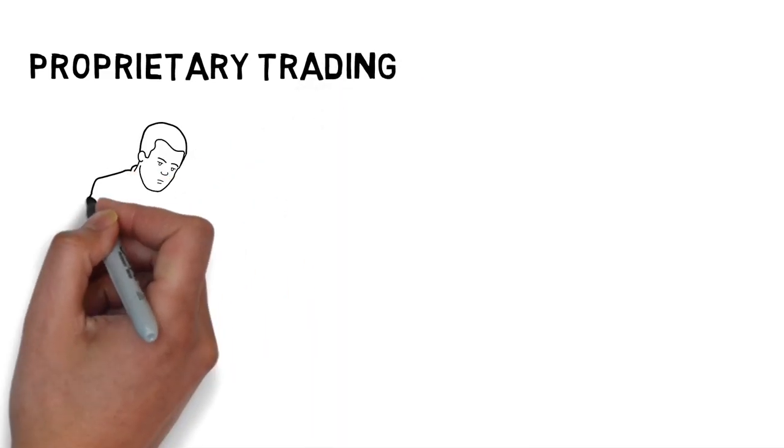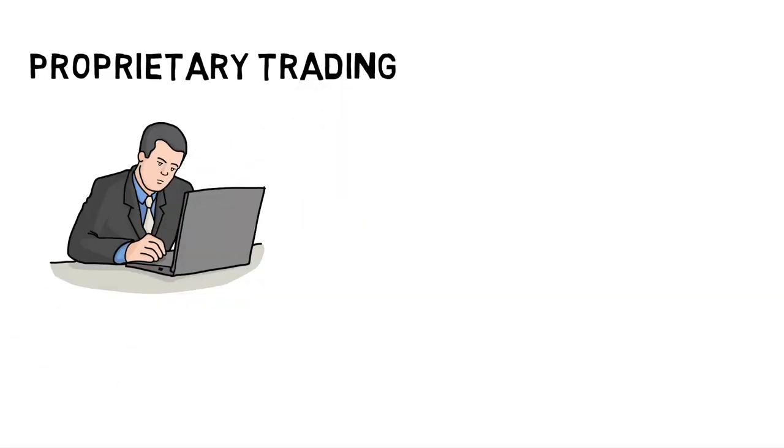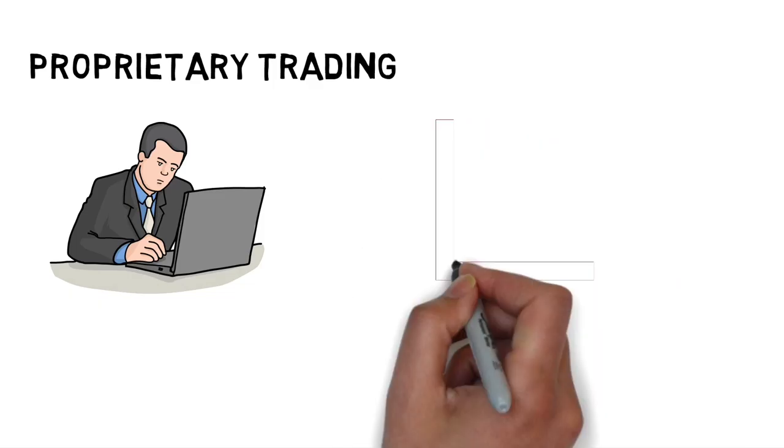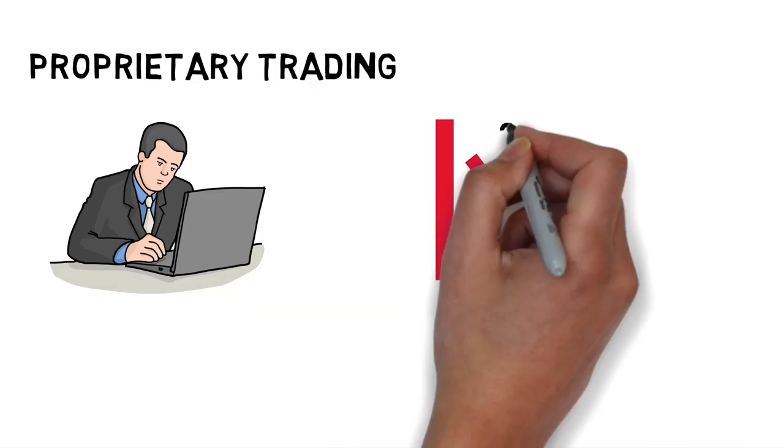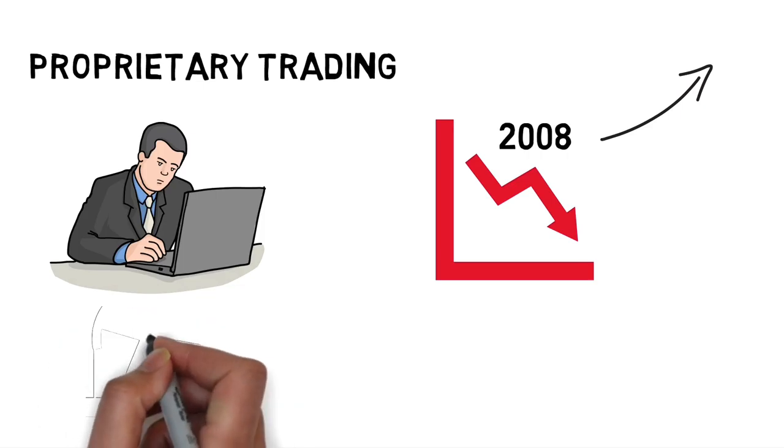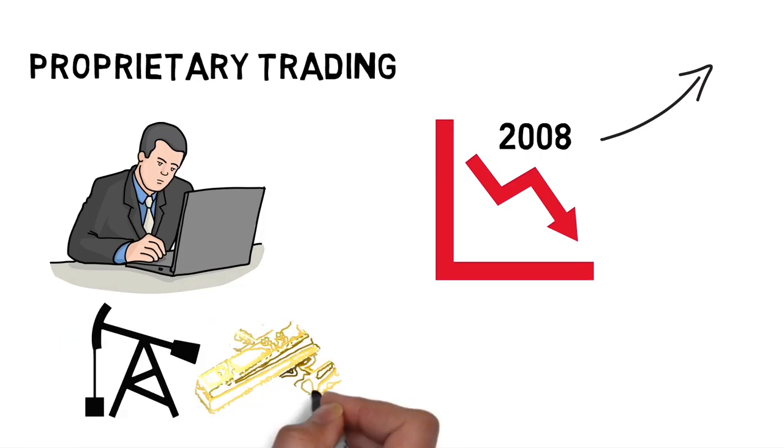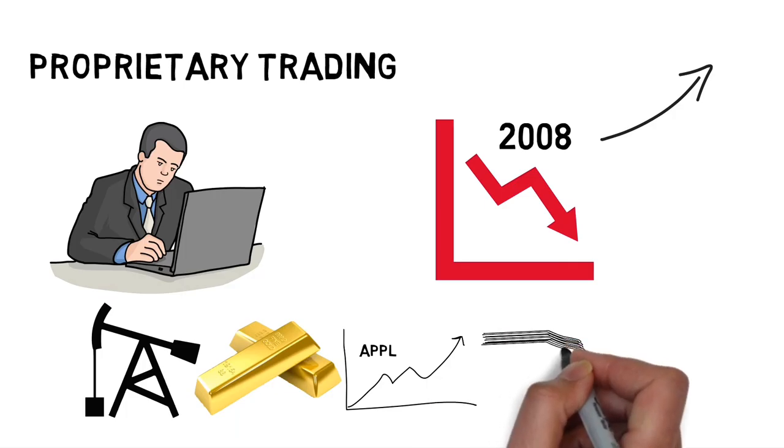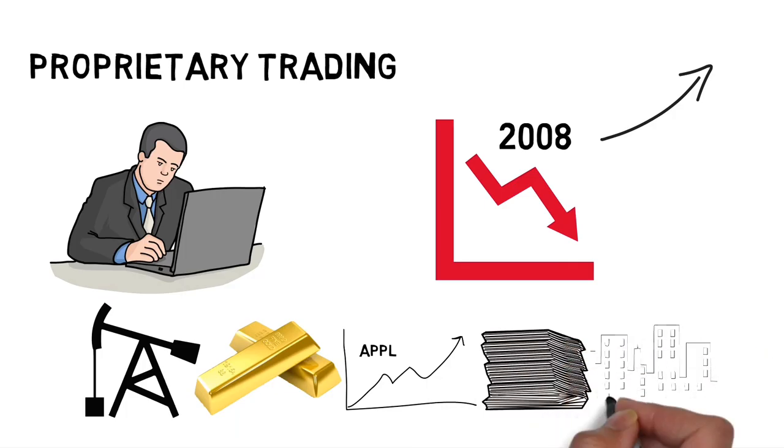The third method is proprietary trading, which means trading with the firm's own money. It has come down a lot after the 2008 crash. By the way, if you want to learn more about the 2008 crash, you can click the i button at the top. With the help of their research, they might trade oil, gold, or simply stocks or their derivatives, or real estate, or anything else for that matter.